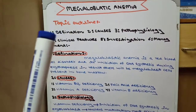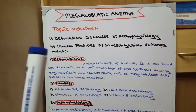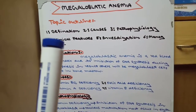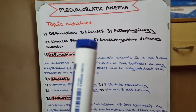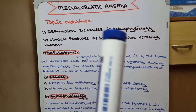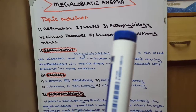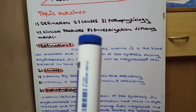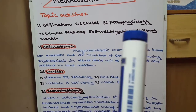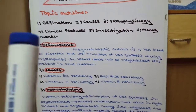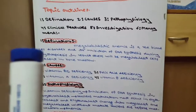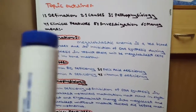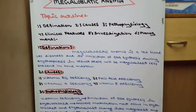Topic outline mein hum kya parhein ge? Megaloblastic anemia ki hum definition parhein ge, uski causes, uski pathophysiology, uski clinical features, investigations, aur management. Sabse pehle hum start karte hain definition se.